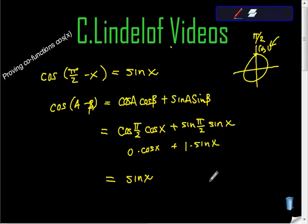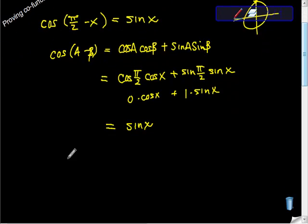You could do this same thing backwards, because sine of pi halves minus x is also equal to cosine x. We could prove that using the difference formula for sine, and we would do the same steps and get cosine back.